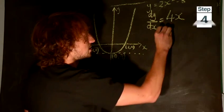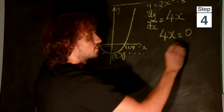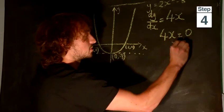So we set this equal to 0. 4x equals 0. We figure out that x is also equal to 0.